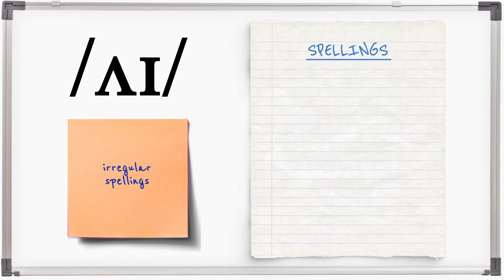And there are some irregular spellings: either, isle, buy, island, maestro.